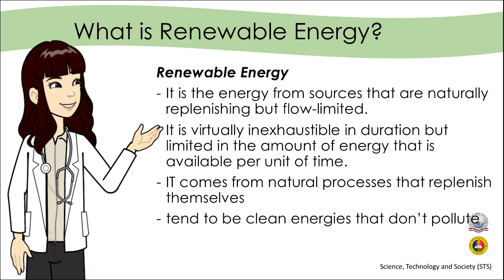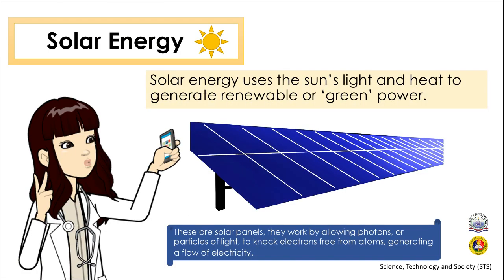Now let us proceed to the different alternative energies, or specifically, your renewable energies. Let's begin with solar energy. It is the most common form of energy, which is harnessed by solar panels, or photovoltaic cells. In photovoltaic power stations, they are arranged almost edge-to-edge to capture sunlight in large fields. You will also see them on top of houses and other buildings. When the sun's rays hit the cells, it loosens electrons from their atoms, allowing them to flow through the cell and generate electricity. This can generate power for thousands of people at once.